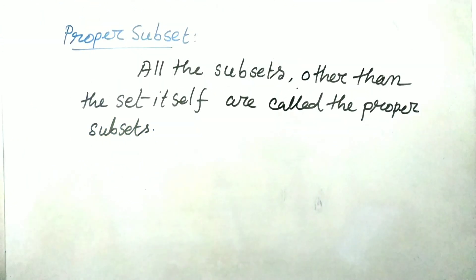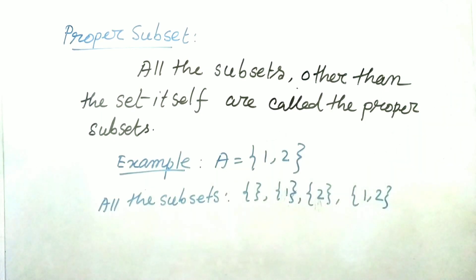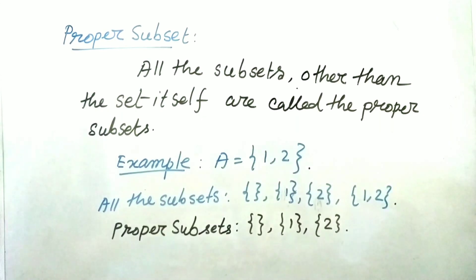Proper subset. All the subsets other than the set itself are called the proper subsets. Let's go for an example. Suppose A is equal to 1, 2 is a set. Now all the subsets are the empty set 1, 2 and the set itself. Since the set itself is not a proper subset of this set, therefore the proper subsets are this empty set 1 and 2.